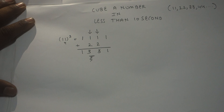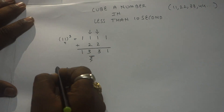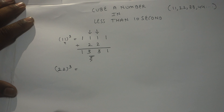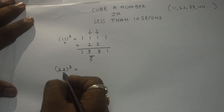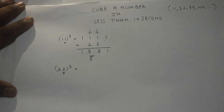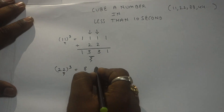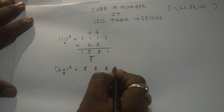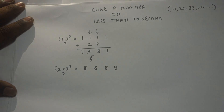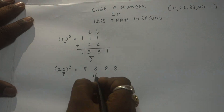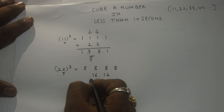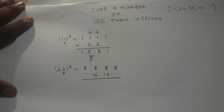Let's check one more example — that is 22. The digit is 2. What is the cube of 2? It is 8. Write 8 four times. Apply the same concept and fundamental. Step two: double the middle two digits, so this will be 16 and 16.